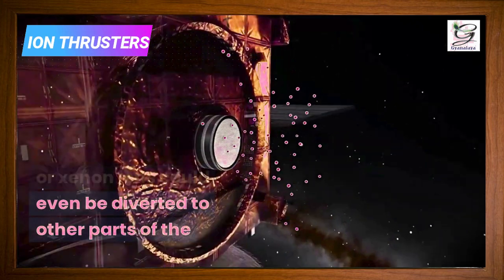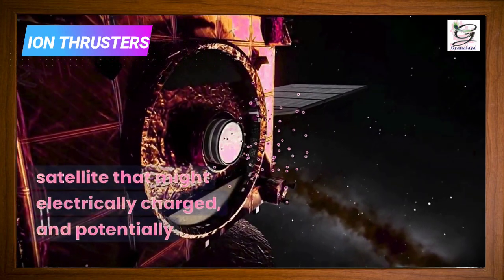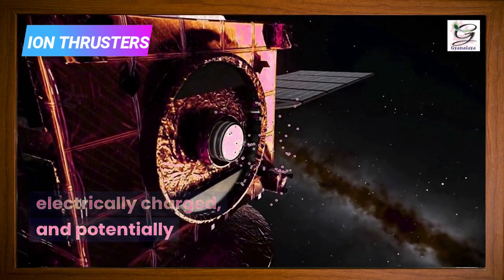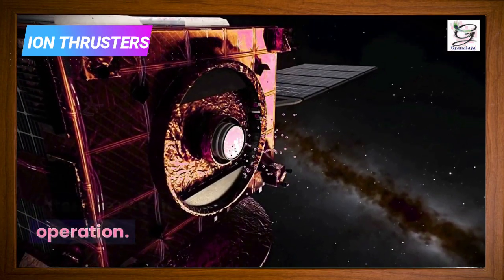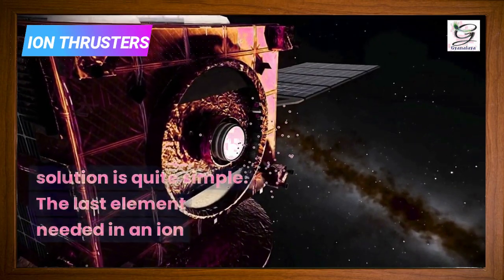Xenon ions could even be diverted to other parts of the satellite that might be electrically charged and potentially interfere with its operation. Luckily, the solution is quite simple.